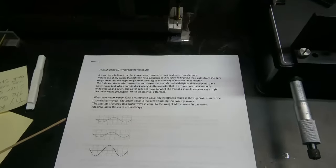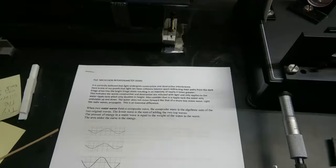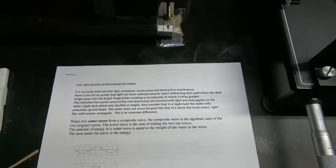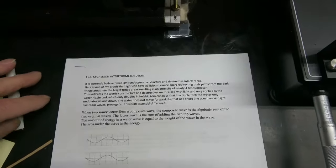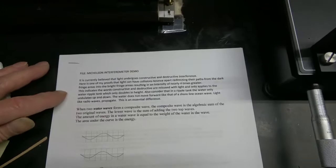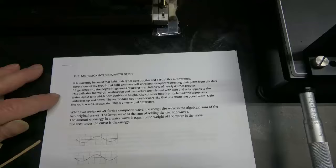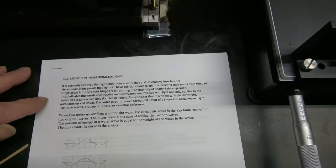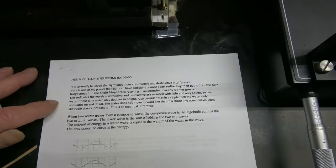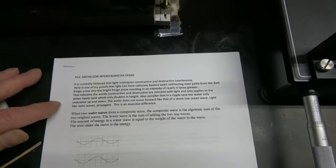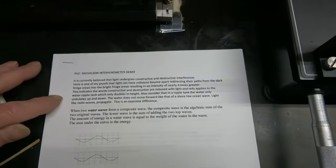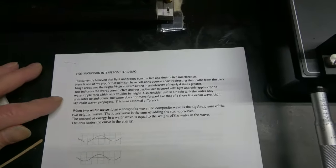This is the Michelson interferometer demo. It's currently believed that light undergoes constructive and destructive interference. Here's one of my proofs that light can have collisions, bounce apart, redirecting their paths from the dark fringe areas into the bright fringe areas, resulting in an intensity of nearly four times greater than any single path.